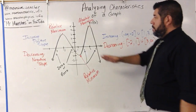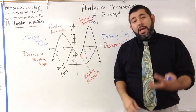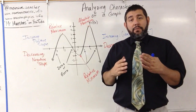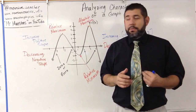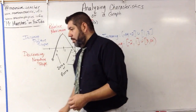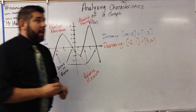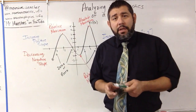Sometimes the places where we see a change in slope from negative to positive are called critical points. Now, we've got one more part of this graph that we want to talk about, and that's concavity.